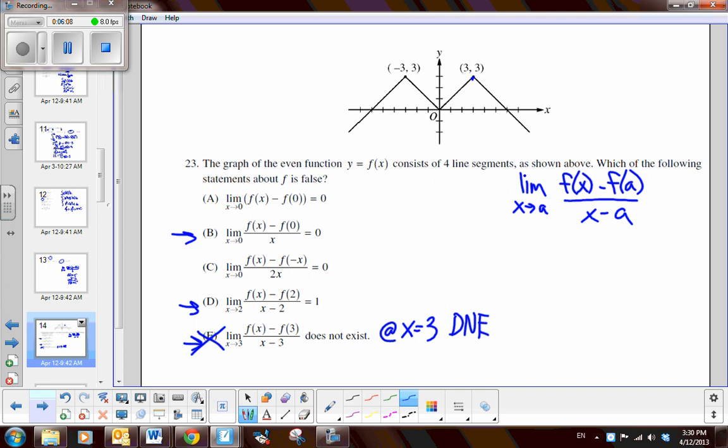Now, D is asking the derivative at x equals 2. So when I look at x equals 2, now that's a linear segment. So what's the slope of that line? It looks like it's going up 1 over 1. So the slope is 1. And that's what they put. So this one is also true. So that's not going to be the answer. B, it says the derivative when x is 0, they're saying the derivative is 0. But when I look at 0, I notice I have a corner. So the derivative does not exist. So this is my false statement. The answer would be B.